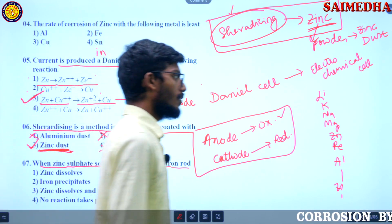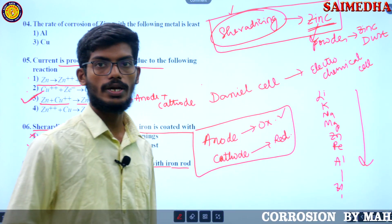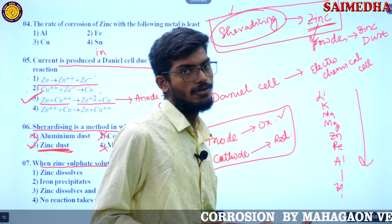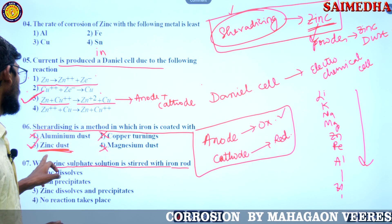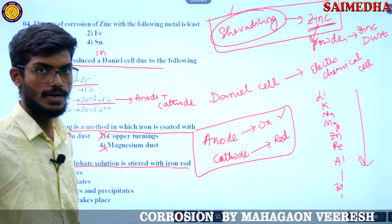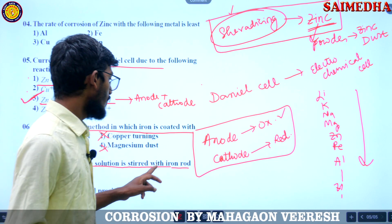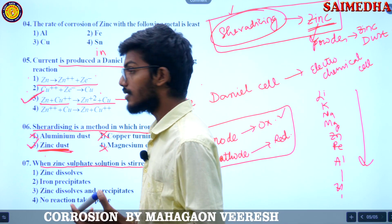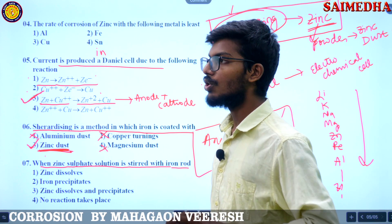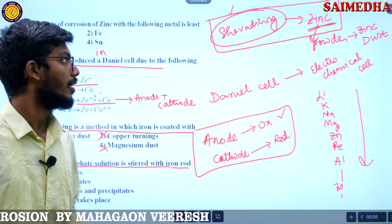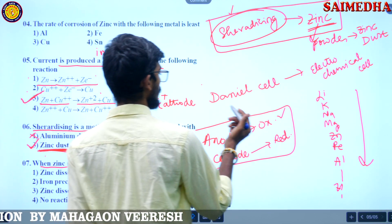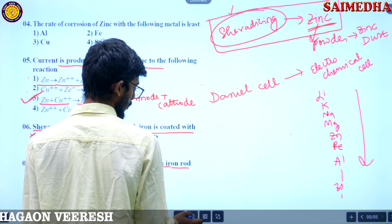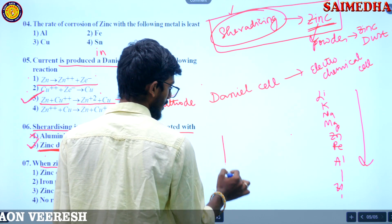The electrochemical series is placed in decreasing order of oxidation or increasing order of reduction. When zinc sulfate solution is stirred with an iron rod — if a more active metal is placed in a less active metal solution, consider a beaker with less active metal solution and insert a more active metal rod.